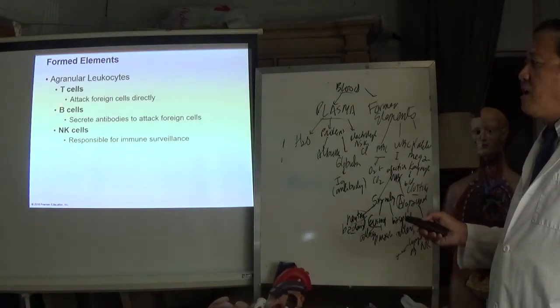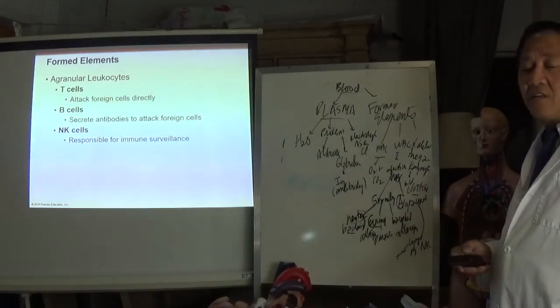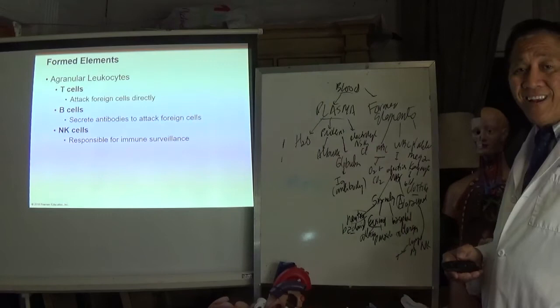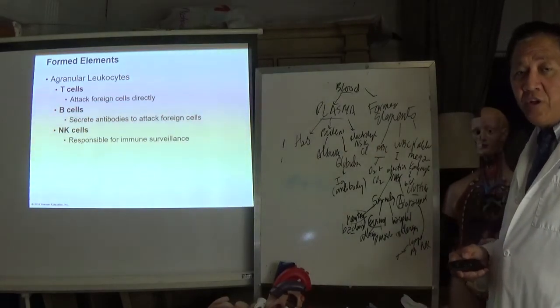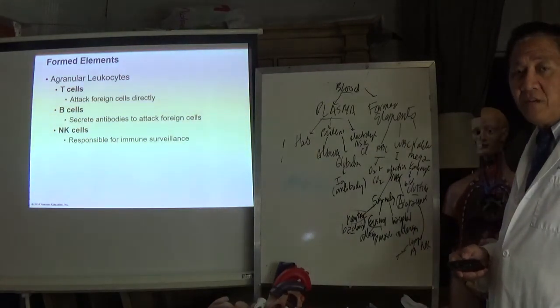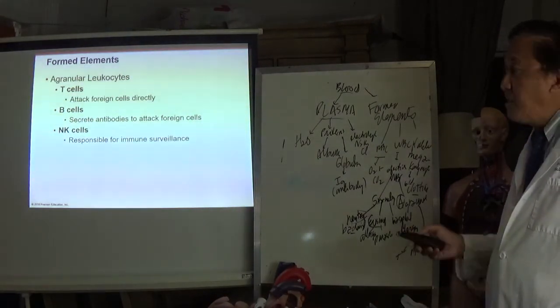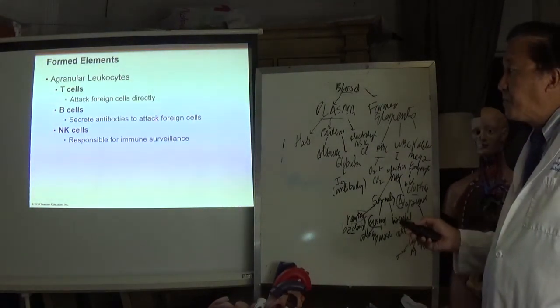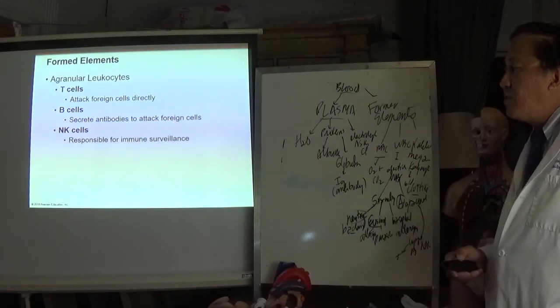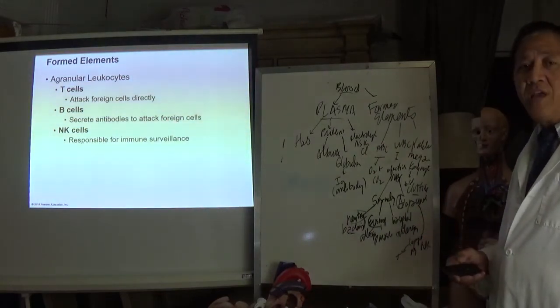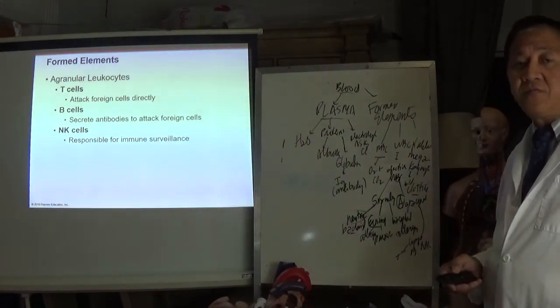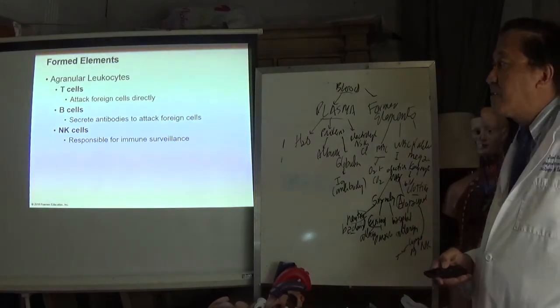T cells attack foreign cells directly while B cells are converted into plasma cells that produce antibodies to attack foreign cells. NK cells are important for immunosurveillance.